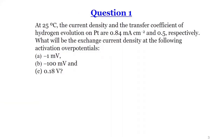The first question says: at 25 degrees C, the current density and the transfer coefficient of hydrogen evolution on platinum are 0.84 mA per centimeter squared and 0.5 respectively. What would be the exchange current density at the following activation overpotentials: negative 1 millivolt, negative 100 millivolts, and 0.18 volts.